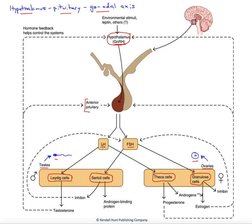The LH is going to act on the secretory cells in both male and female, the Leydig cells producing testosterone, the theca cells producing progesterone and androgens, and then with the help of the granulosa cells, sort of a team effort there, producing estrogen as well.